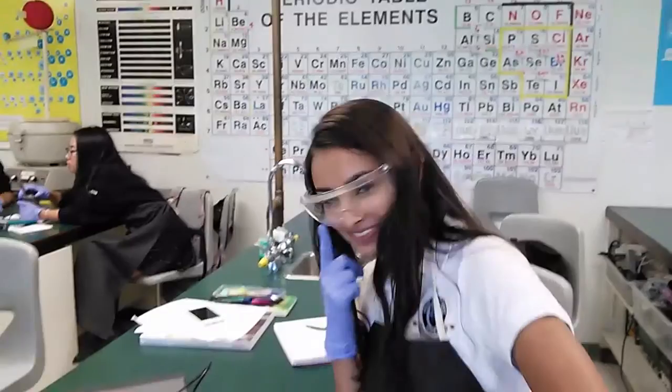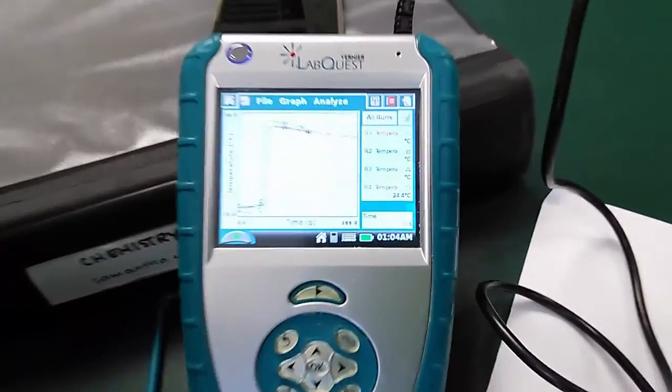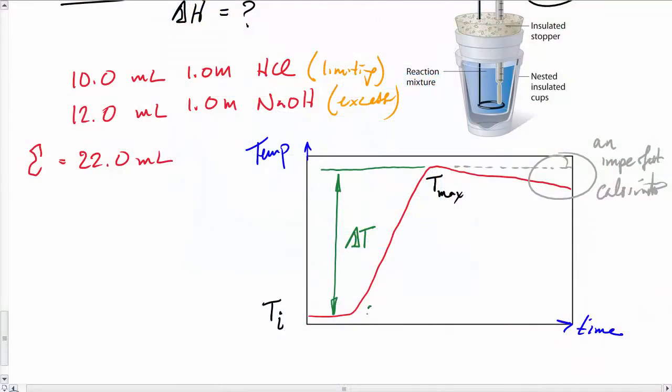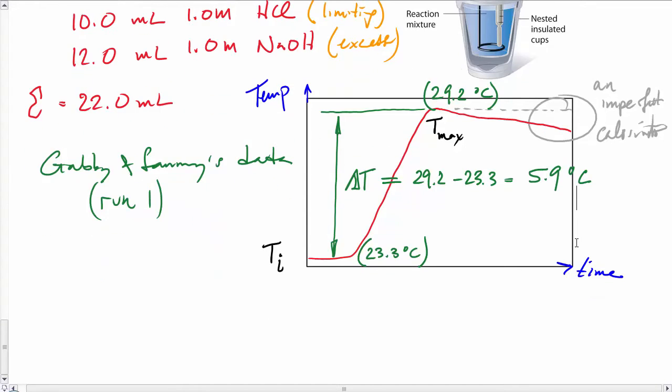Hi, Gabby here. This is our data. We've done all three trials, and they were all very similar. We just saw Gabby and Sammy's data, so let's analyze that right now. This is their first run. Their initial temperature was 23.3 degrees. Final temperature is 29.2. That gave them a change in temperature of 5.9 degrees Celsius.